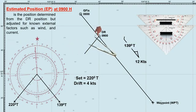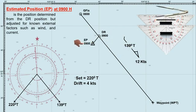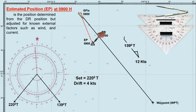Now, lay the divider from the DR position at 0900 hours along the tidal vector. This point is the ship's estimated position at 0900 hours, which is marked by the standard symbol — a triangle with a dot inside. Mark the tidal vector with 3 arrows pointing toward the direction of the tidal current. This is the ship's movement relative to the ground due to the effect of tidal current. So estimated position is more accurate than DR, because it accounts for known external factors, but it is still less precise compared to GPS and radar fixes.